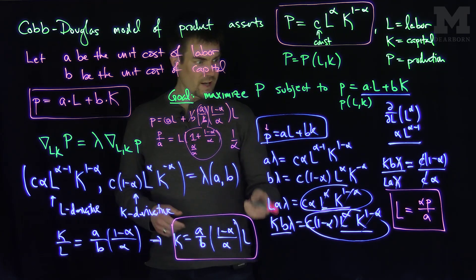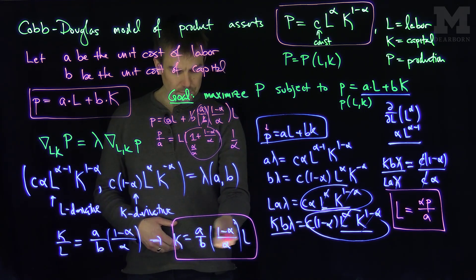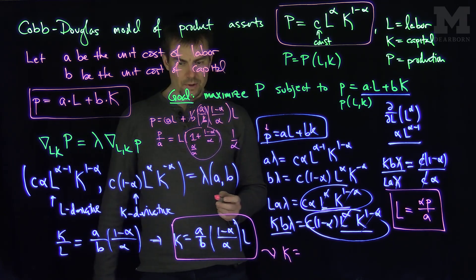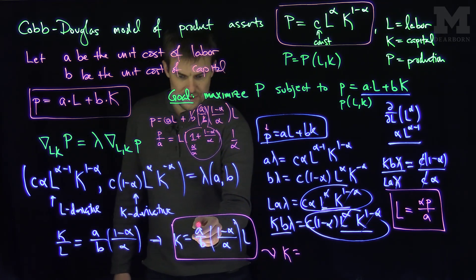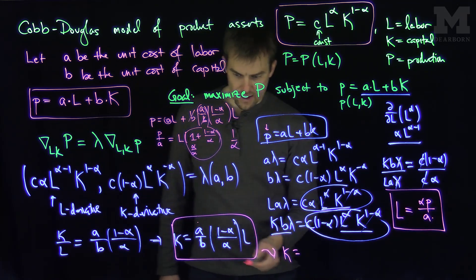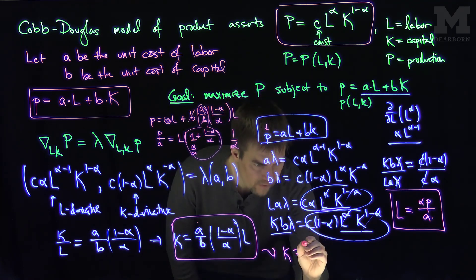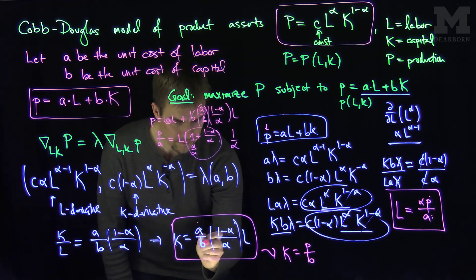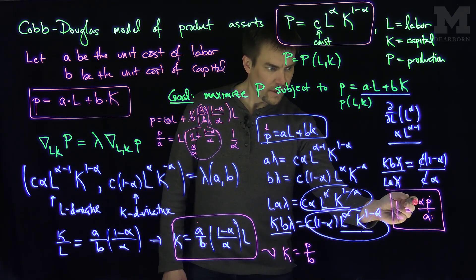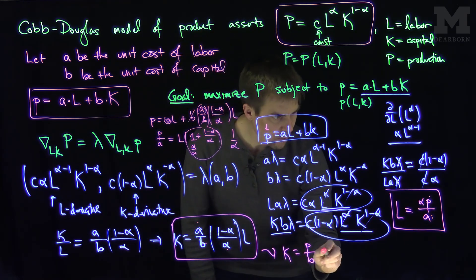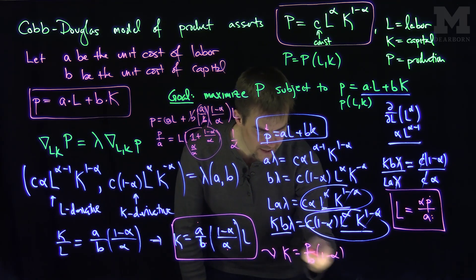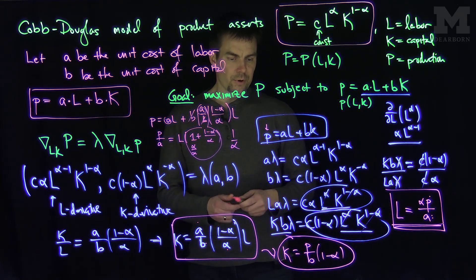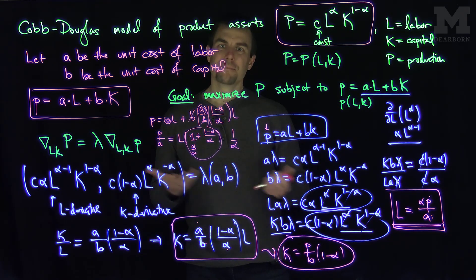Then we can solve for K using the relationship K = (A/B)·(1-α)/α·L. Substituting L = αP/A, the A's cancel, and we get K = (1-α)·P/B. So this value of K and this value of L will optimize production given a budget of little p. Thank you very much.